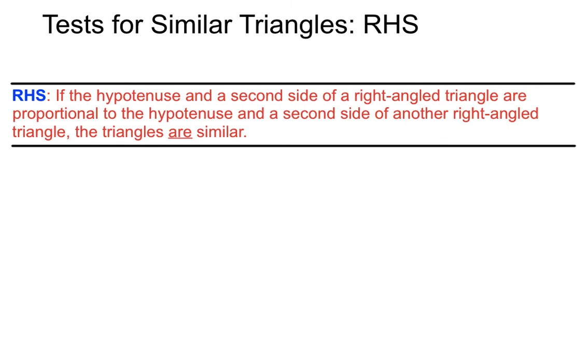So the test said, just to recap, if the hypotenuse and second side of a right angle triangle are proportional or in the same ratio to the hypotenuse and a second side of another right angle triangle, the triangles are similar. Boy, I'm glad we had the example to work through because that's certainly a mouthful there. But have a look at the working and check the video out again if you need to.